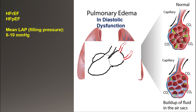In diastolic dysfunction, the left ventricle becomes stiffer and blood flows with difficulty into it. With progressing diastolic dysfunction, left atrial pressure increases. This elevated pressure is transmitted to the pulmonary venous system, causing high hydrostatic pressure at the capillary level in the lungs, resulting in interstitial and alveolar edema — the reason for shortness of breath.